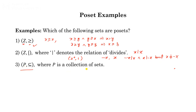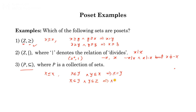Finally, let P be a collection of sets with the subset relation ⊆. For every set x, x ⊆ x, so it is reflexive. If x ⊆ y and y ⊆ x then x = y, so it is antisymmetric. If x ⊆ y and y ⊆ z then x ⊆ z, so it is transitive. Therefore the subset relation is reflexive, antisymmetric, and transitive, and (P, ⊆) is also a poset.